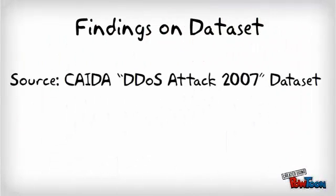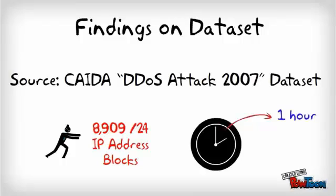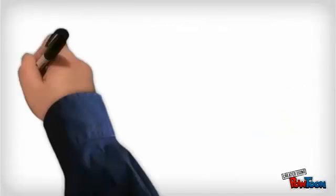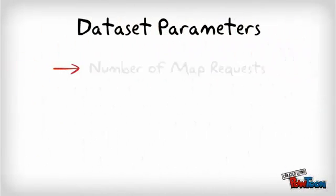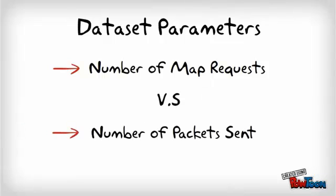The CAIDA DDoS ATT&CK 2007 dataset has been used to present the numerical results. In this dataset, about 8,000 IP address blocks have been used to send packets to the victim over a period of one hour. In this article, only packets sent to the victim are considered. The parameters for the dataset include the number of map requests to the mapping server and the number of packets sent to the victim.